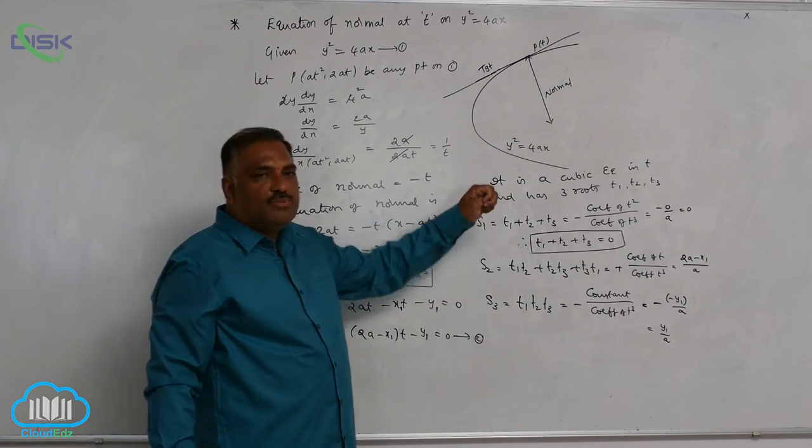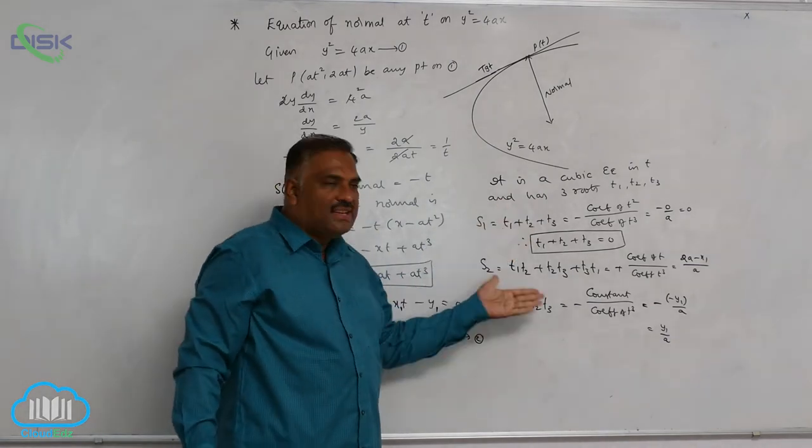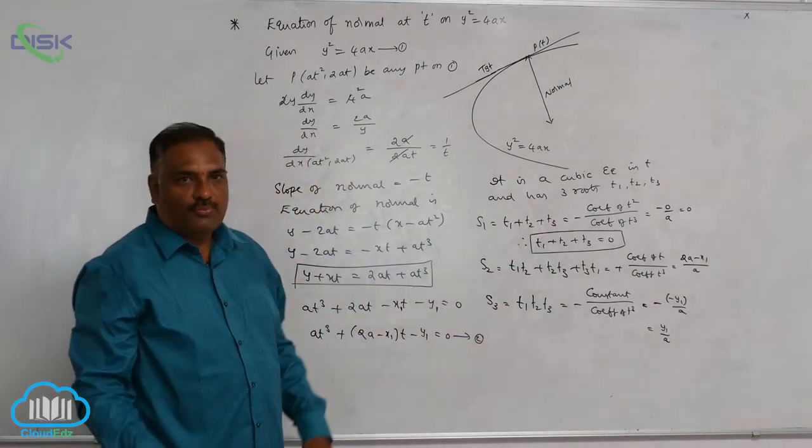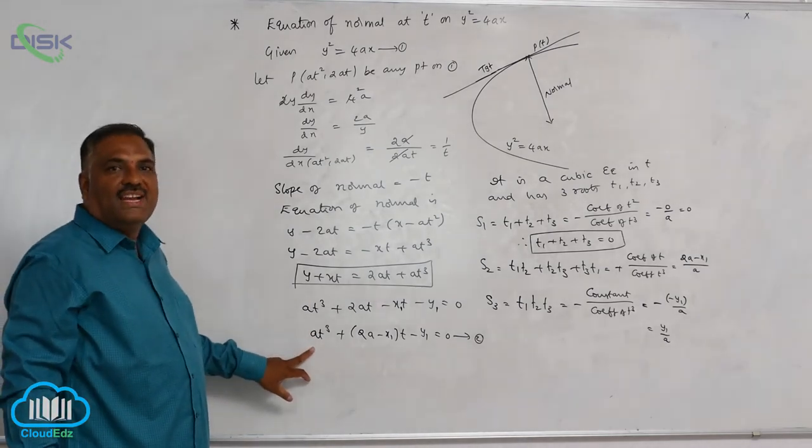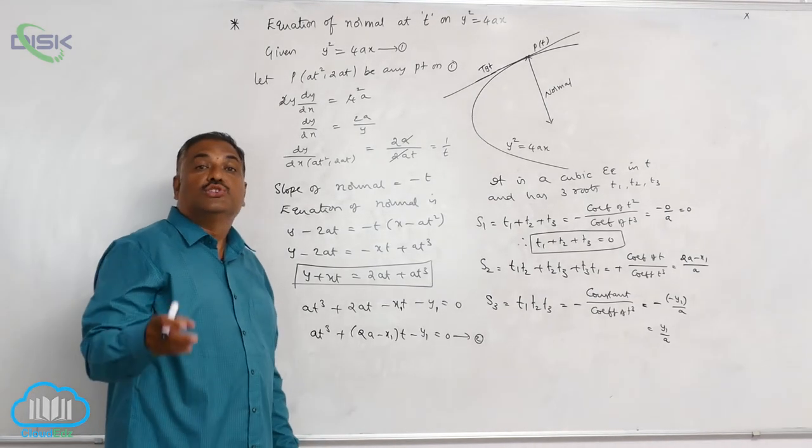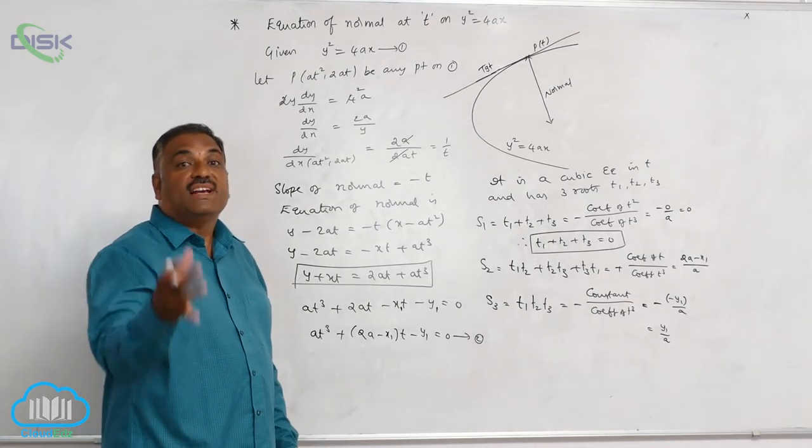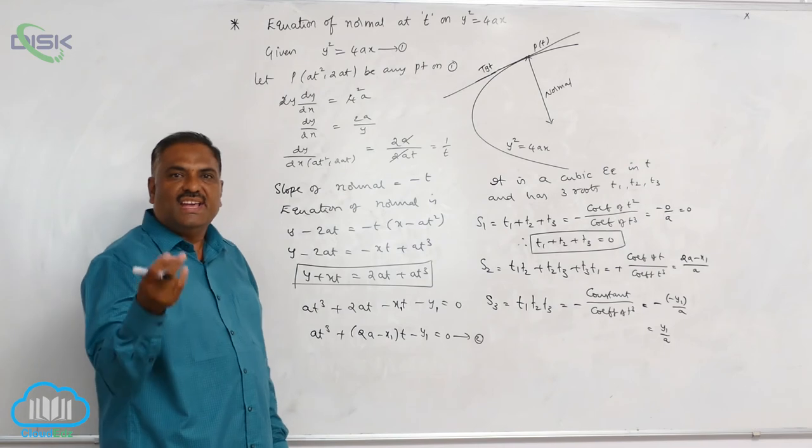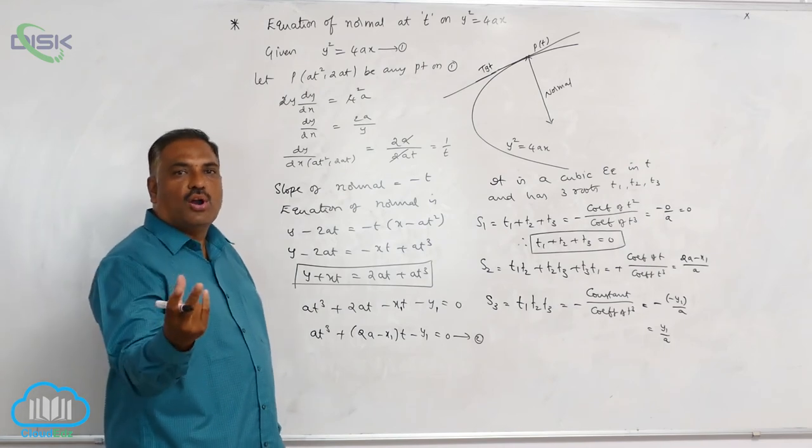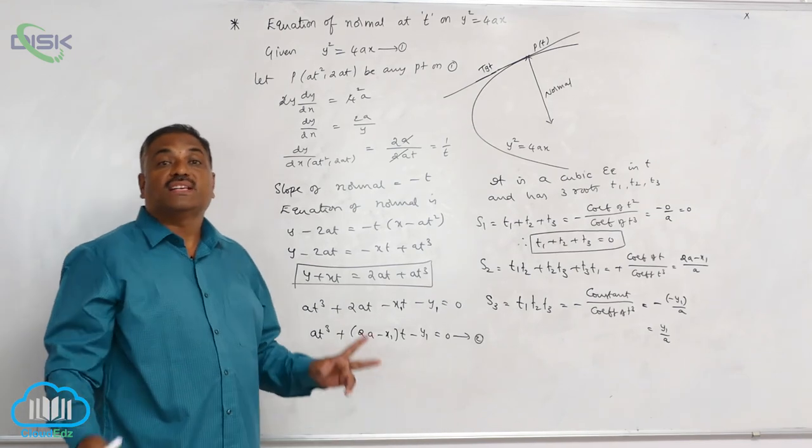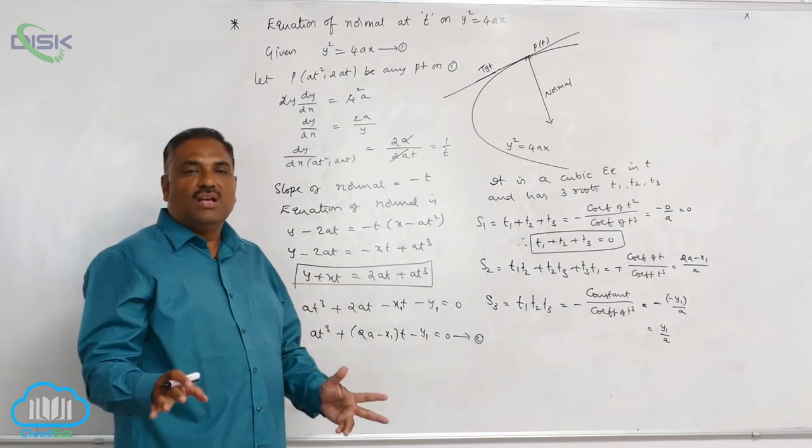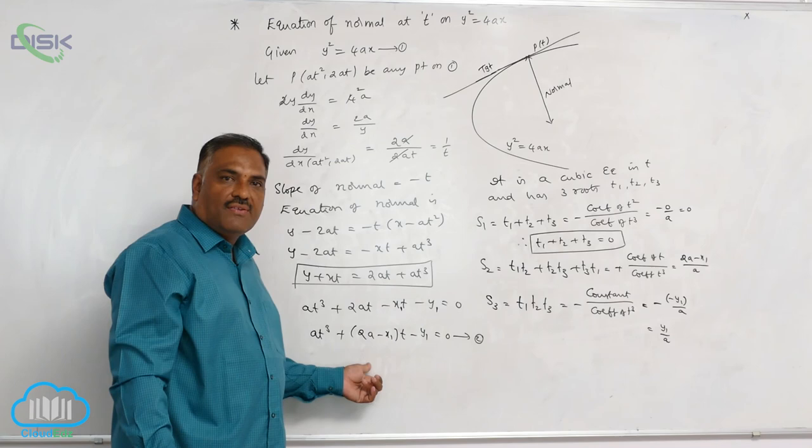Similarly, particularly in solving objective problems, these three results will play a major role. And moreover, the equation of normal in terms of t is a cubic equation. So we can say very clearly a maximum of three normals is possible from any point to the parabola. I repeat once again, a maximum of three normals is possible from any point to the given parabola.